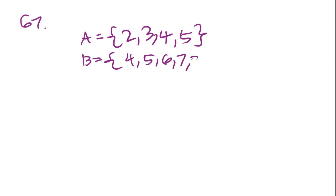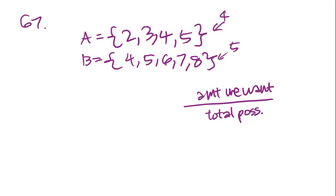Number 67. They give us these numbers here: set A is 2, 3, 4, 5, and set B is 4, 5, 6, 7, 8. They say two integers will randomly be selected from the sets above, one integer from set A and one from set B. What is the probability that the sum of the two integers will equal 9? In terms of probability, it's always the amount we want over total possibilities. There's 4 in A and 5 in B, so we multiply these two numbers to get 20 on the bottom.